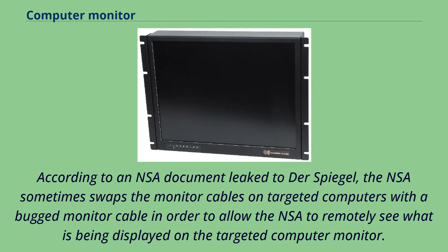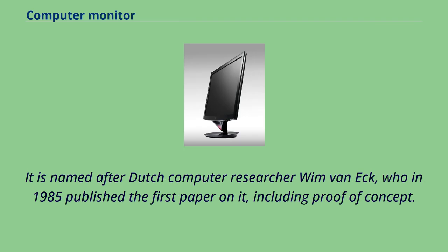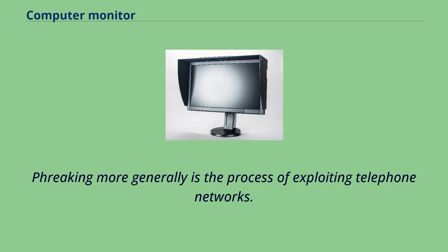According to an NSA document leaked to Der Spiegel, the NSA sometimes swaps the monitor cables on targeted computers with a bugged monitor cable in order to remotely see what is being displayed on the targeted computer monitor. VanEck phreaking is the process of remotely displaying the contents of a CRT or LCD by detecting its electromagnetic emissions. It is named after Dutch computer researcher Wim VanEck, who in 1985 published the first paper on it including proof of concept. Phreaking more generally is the process of exploiting telephone networks.